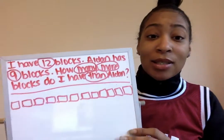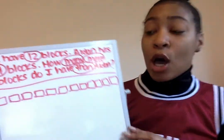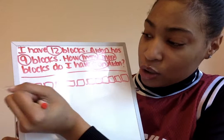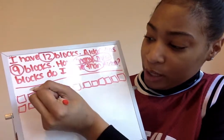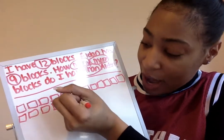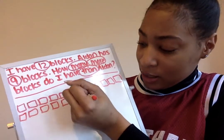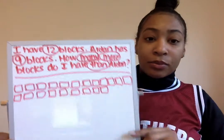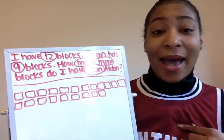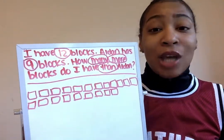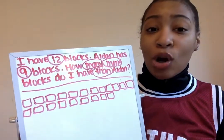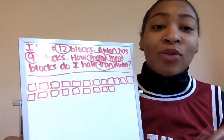Directly under my blocks, I'm going to draw nine blocks for Aiden — one, two, three, four, five, six, seven, eight, nine. Now the question says: how many more blocks do I have than Aiden? So let's go back and count my blocks again and count Aiden's blocks again, so we can make sure we have the correct 12 and the correct nine.